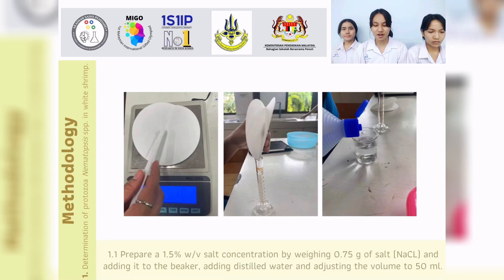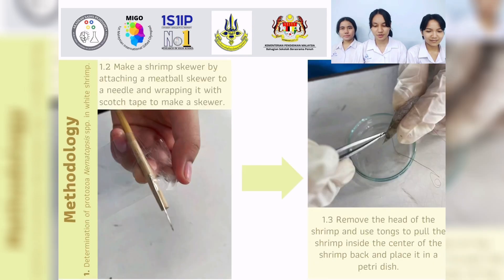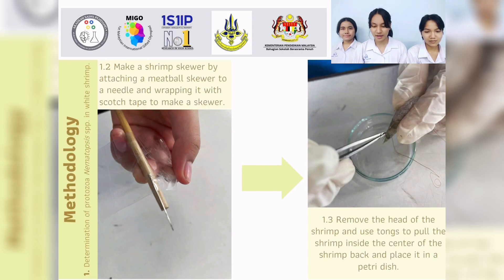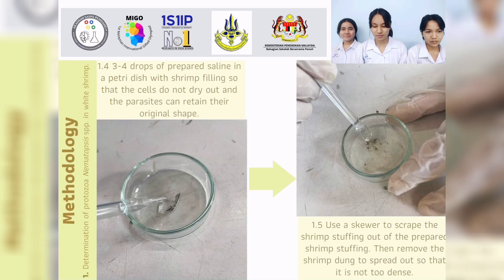First step: determination of protozoa Nematophil SPP in Yshim. One, prepare a 1.5% by volume salt concentration. Two, make a shim skewer by attaching a meatball skewer to a needle and wrapping it with skull tape to make a skewer. Three, remove the head of the shim and use a tool to put the shim inside the center of the shim back and place it in a breeder dish. Four, add three to four drops of prepared solution in a breeder dish.